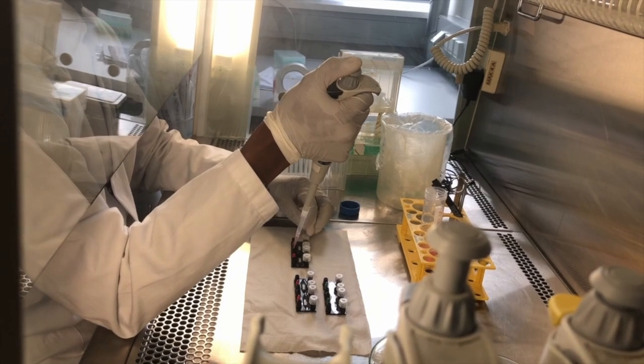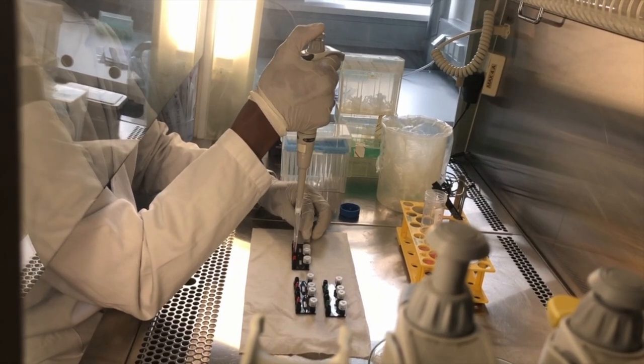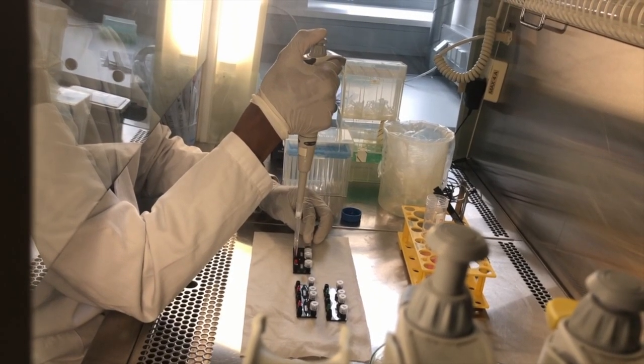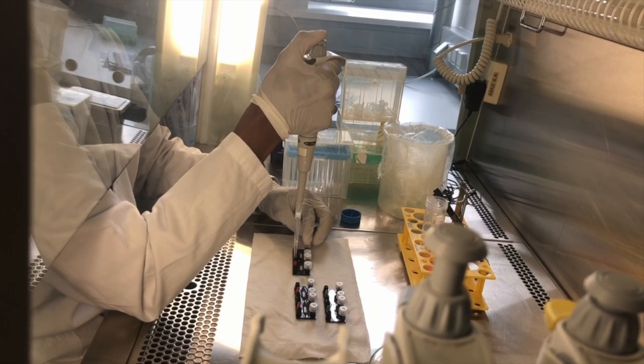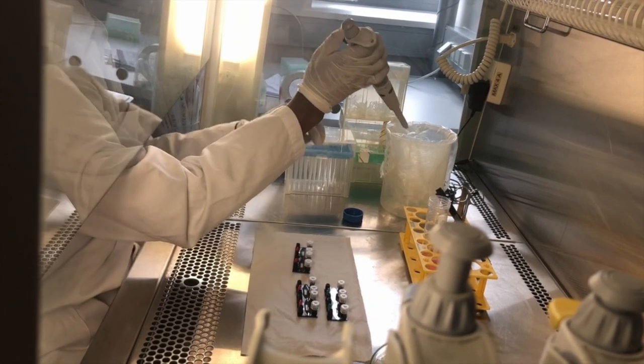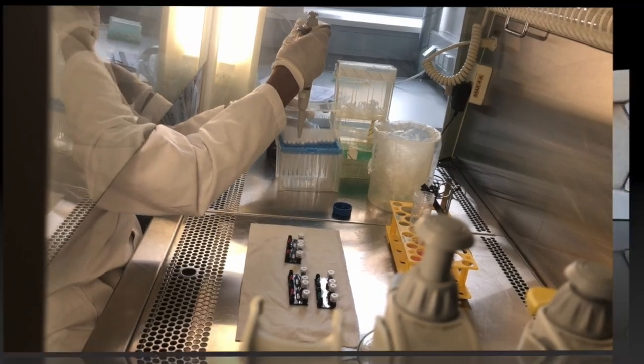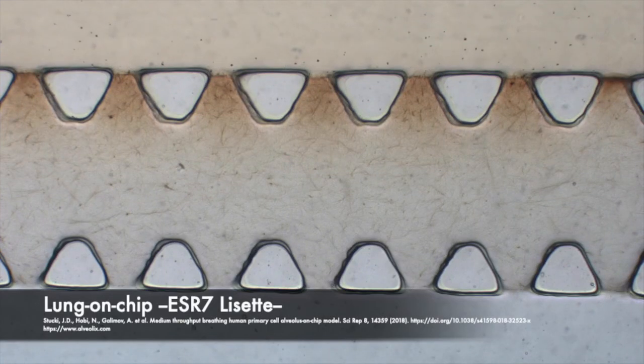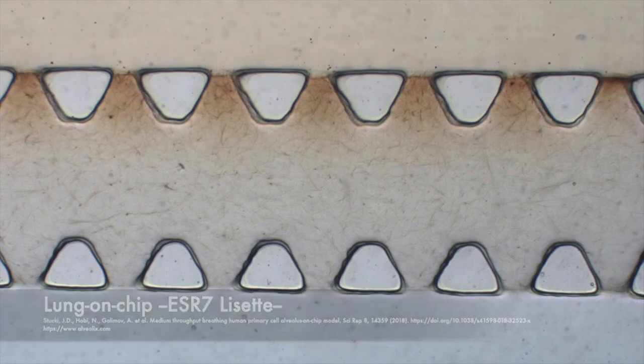Once isolated, the cells can be added into the chip, simply by pipetting. The chip might need to be coated with extracellular matrix before the cells are added, so that they feel more comfortable in this strange new environment. Once the cells are acclimated, they can be perfused with media and kept alive for up to a month.